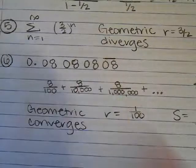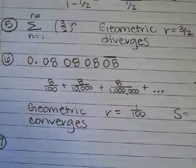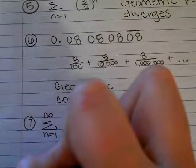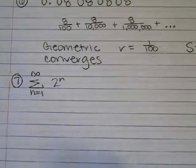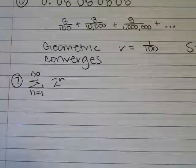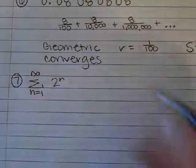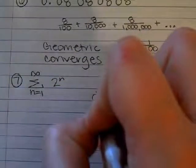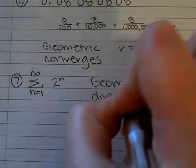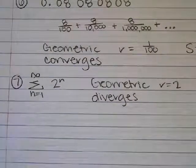Example seven: the sum from N equals 1 to infinity of 2 to the N. We have to do a simple one after that because that one blew our minds. We're going to conclude it diverges because it's geometric and the R value equals 2. So it diverges because if you wrote out all the terms, they'd be getting bigger, bigger, bigger, adding to infinity — not a specific number.